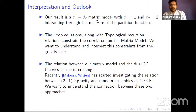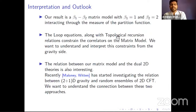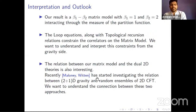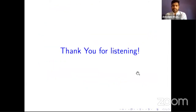Our result is a beta_1, beta_2 matrix model with two values of beta, which interact through the measure of the partition function. The loop equations, along with some topological recursion equations, constrain the correlators of this matrix model. Next we want to understand these constraints from the gravity side. There's a lot of work involving writing the 2d dual of gravity theories in flat space, and we want to understand how our matrix model relates to this. In a recent work, Maloney and Witten started investigating the relation between 2+1d gravity and random ensembles of 2d CFTs, and we want to understand the connection between our approach and that. Thank you for listening.